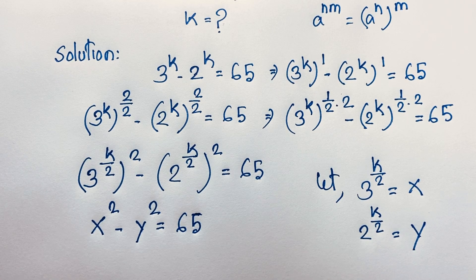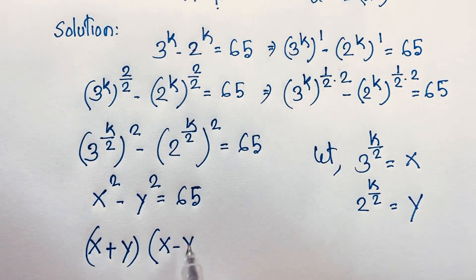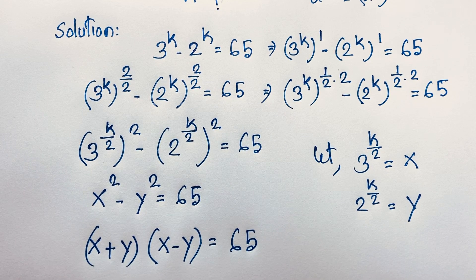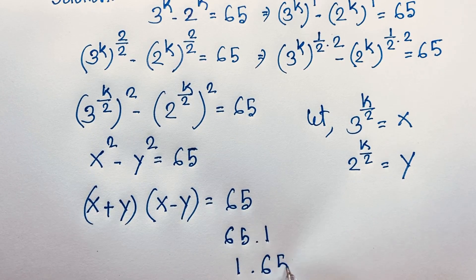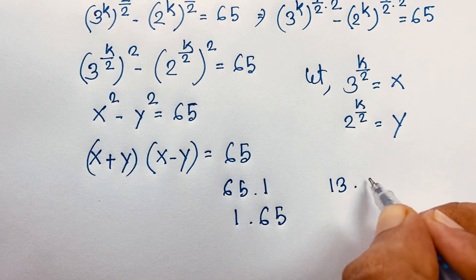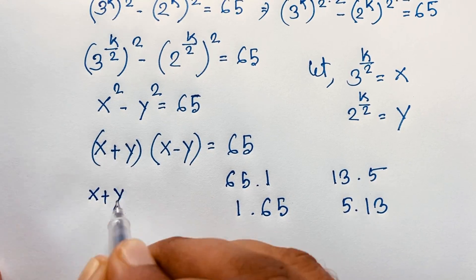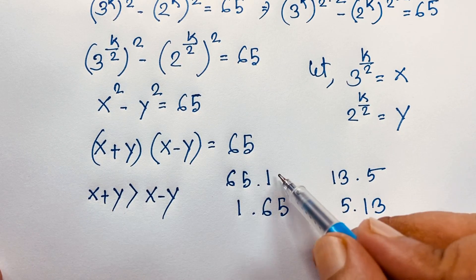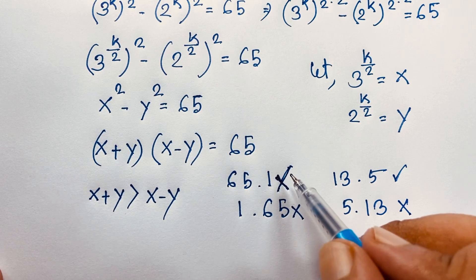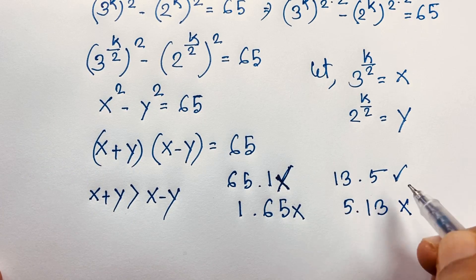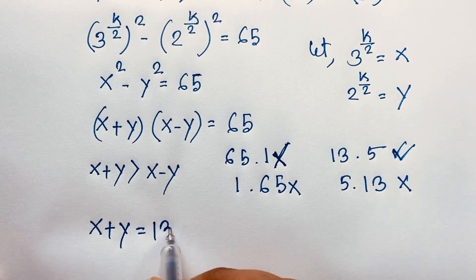Applying the algebraic formula a squared minus b squared equals (a plus b)(a minus b), we get (x plus y)(x minus y) = 65. Now I find the factors of 65: 65×1, 1×65, 13×5, and 5×13. Since x plus y is always greater than x minus y, the valid factor pair is 13 times 5.